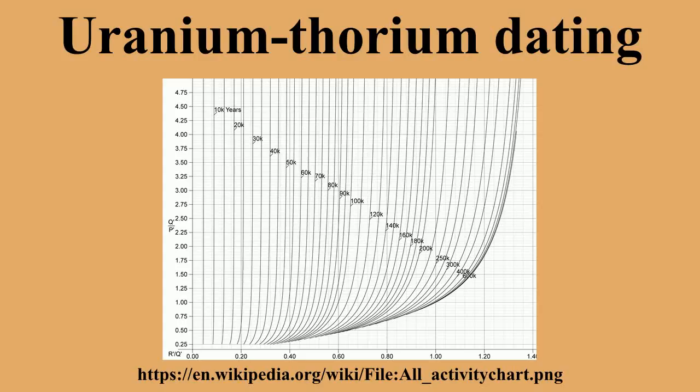Uranium-thorium dating, also called thorium-230 dating or uranium series disequilibrium dating, is a radiometric dating technique commonly used to determine the age of calcium carbonate materials such as speleothems or coral. Unlike other commonly used radiometric dating techniques such as rubidium-strontium or uranium-lead dating, the uranium-thorium technique does not measure accumulation of a stable end-member decay product.